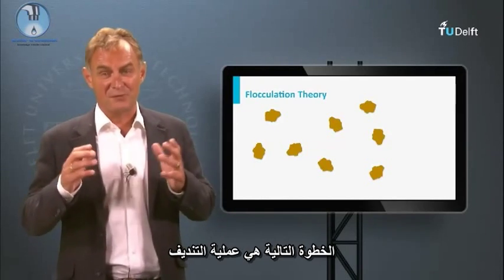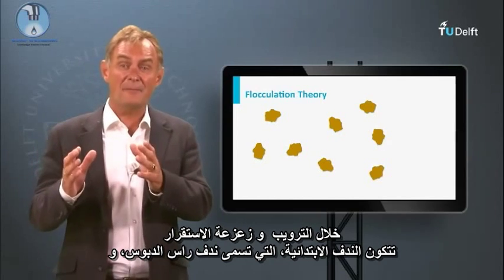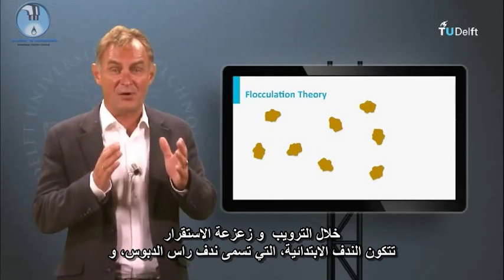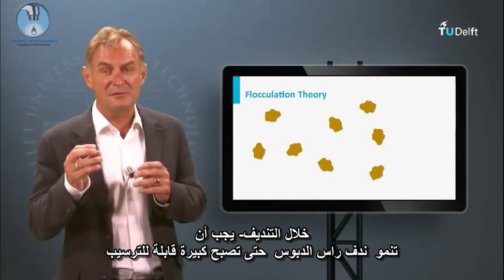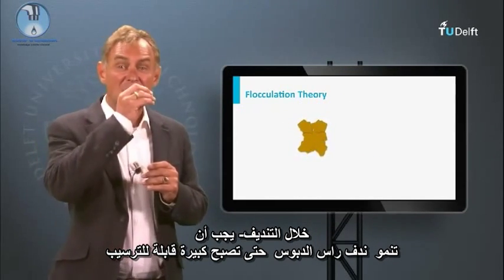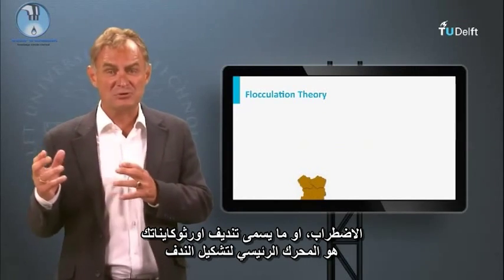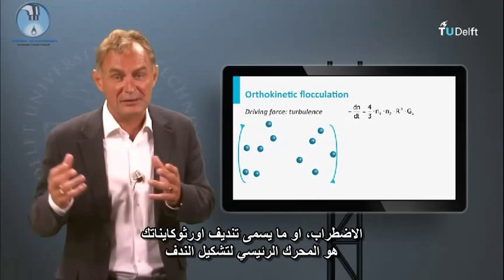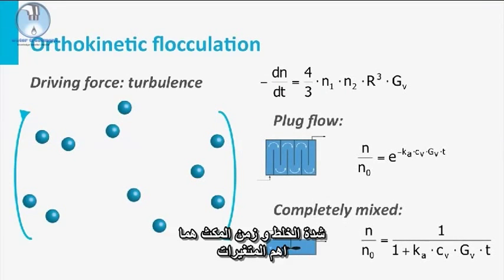The next step is the flocculation process. During coagulation, destabilized elementary flocs — so-called pin flocs — are formed. During flocculation, these pin flocs have to grow into large settleable aggregates. Turbulence, so-called orthokinetic flocculation, is the main driver for floc formation, with mixing intensity and residence time being the most important variables.